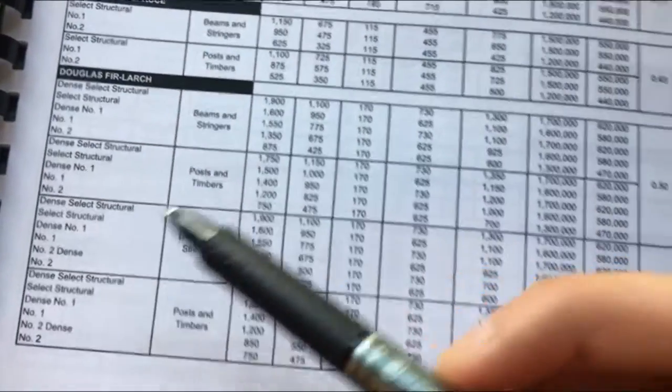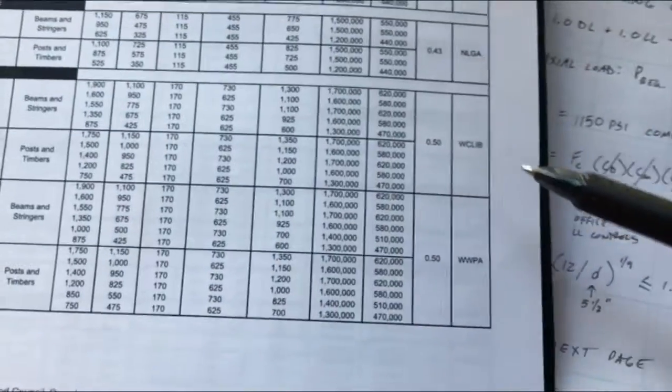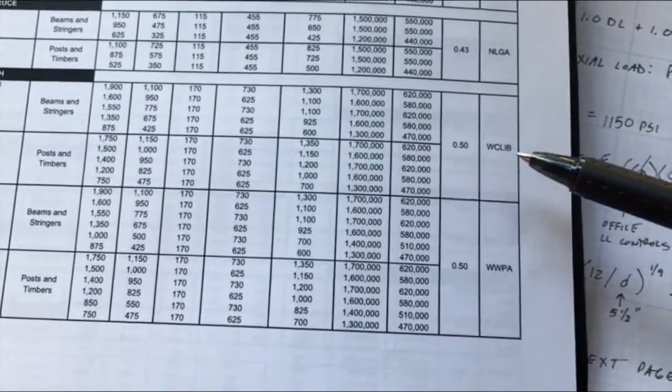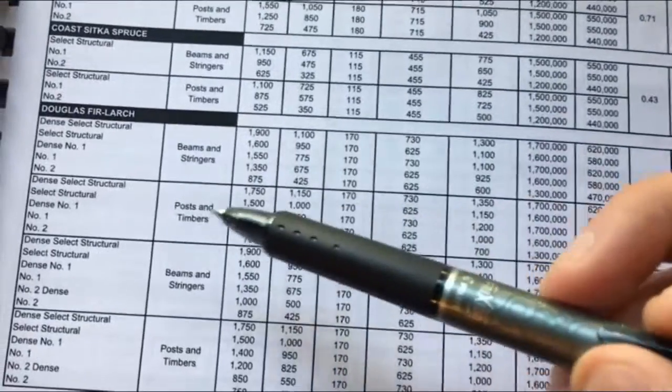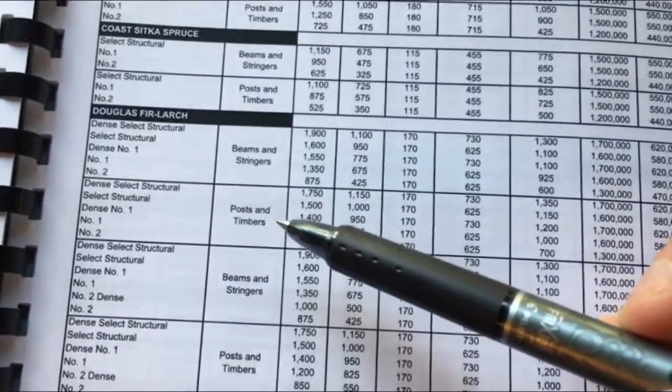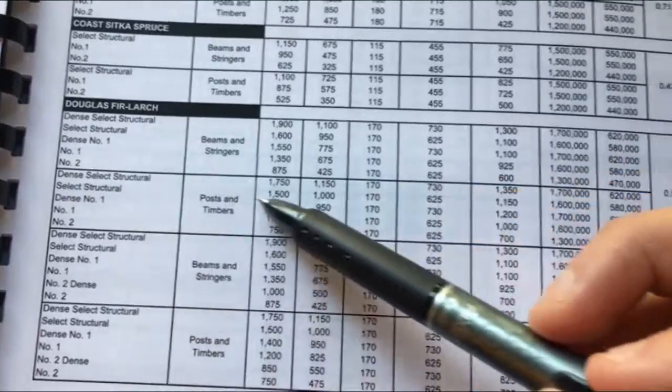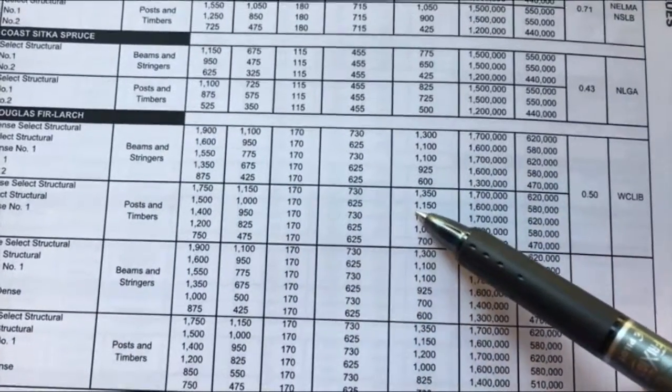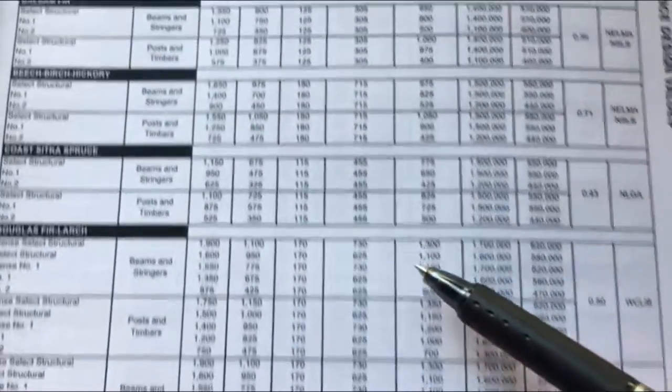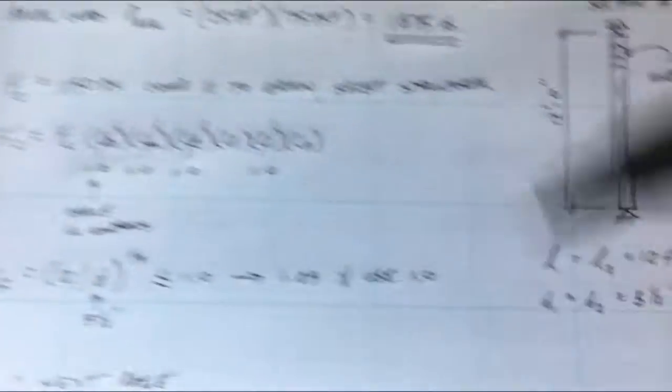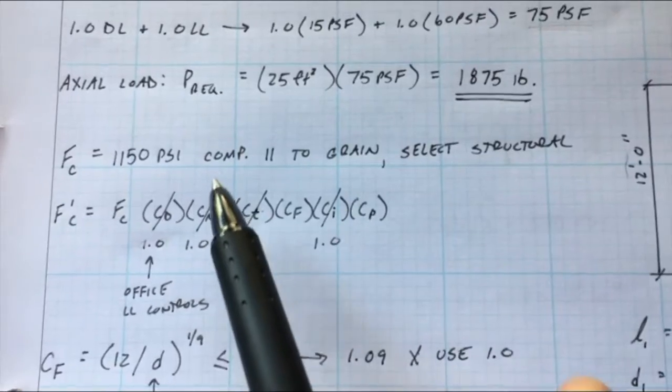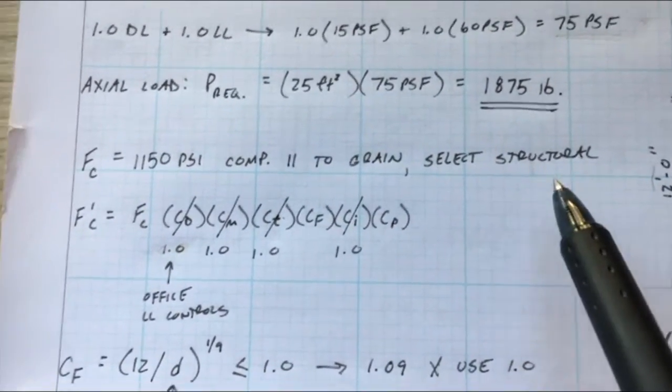We are doing parallel to grain, so f prime c. We go back to our section posts and timbers and there's two different sections and that's just based on the grading rules agency. We're going to do WCLIB. I won't get into that right now but either are fine. Select structural, we're going to move across, that gets us 1150 PSI. So that we've put down that's for compression parallel to grain, select structural.